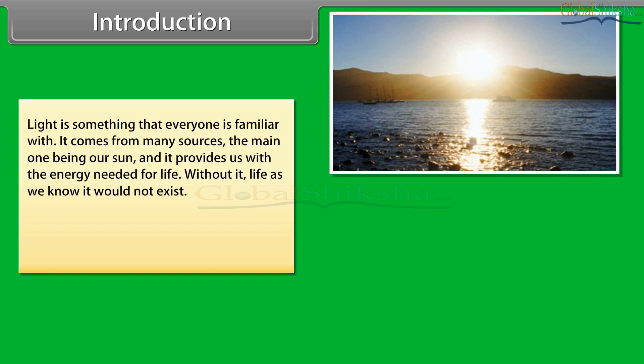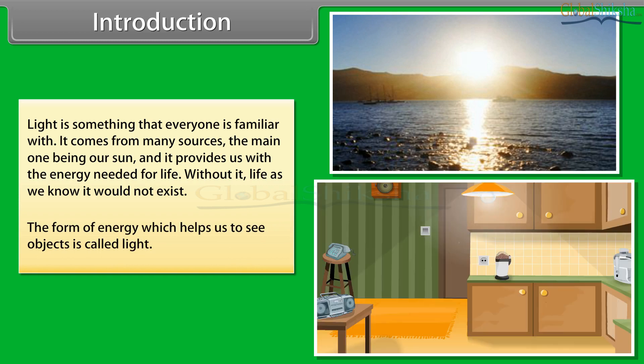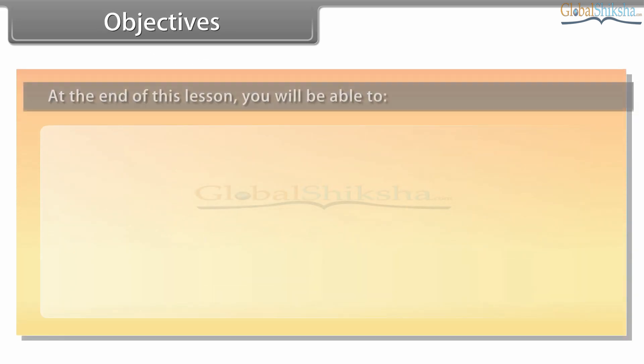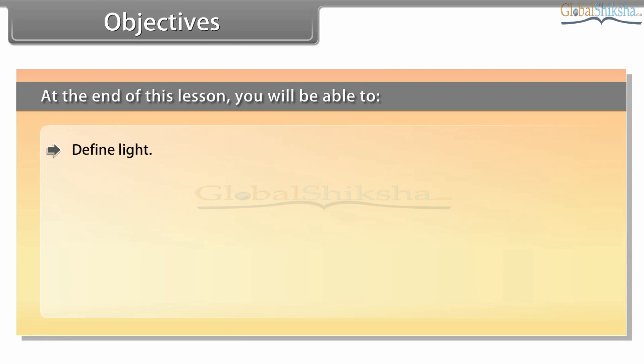The form of energy which helps us to see objects is called light. Objectives: At the end of this lesson you'll be able to define light and understand the nature of light.